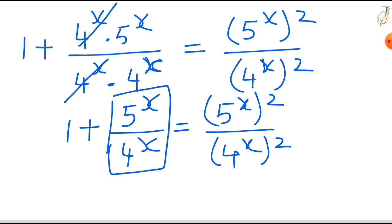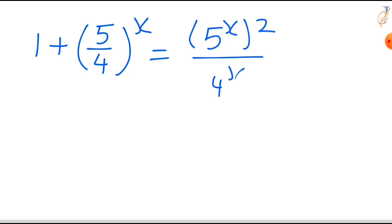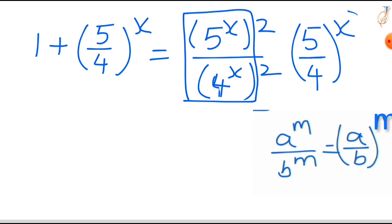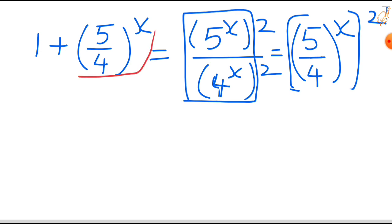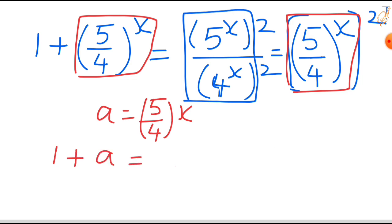Now 5^x/4^x is in the form a^m/b^m, which we can write as (a/b)^m. So our equation becomes 1 + (5/4)^x = [(5/4)^x]². To make it simpler, let a = (5/4)^x.